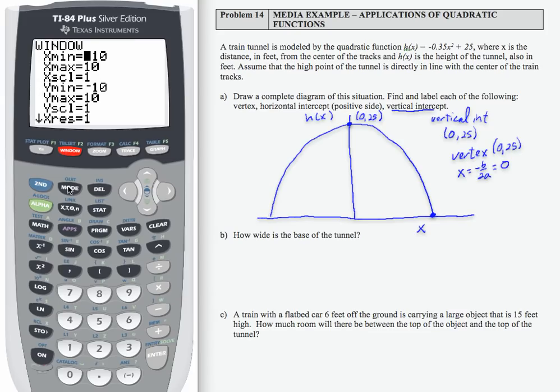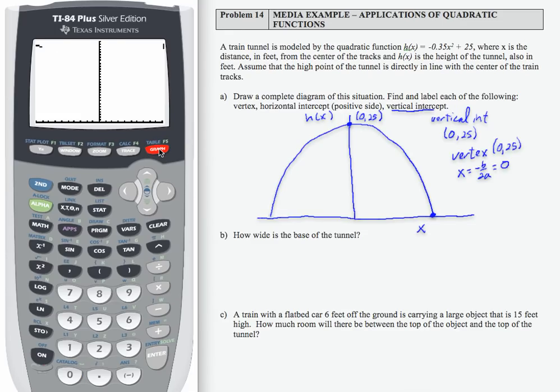If I look at my window, I'm going to leave negative 10 to 10 because we want to see if we can show this shape. But my Y min, I'm going to make that 0. And my, oops, that was my X scale. I don't want my scale to be 0. I want my Y min to be 0. Here we go. And then my Y max, I want to be, oh, let's say 30, just so we can get it above this point right here. Now let's graph. And let's see what happened here.